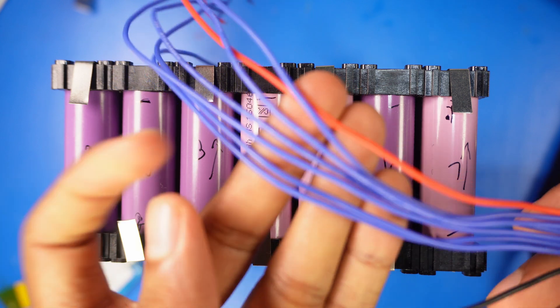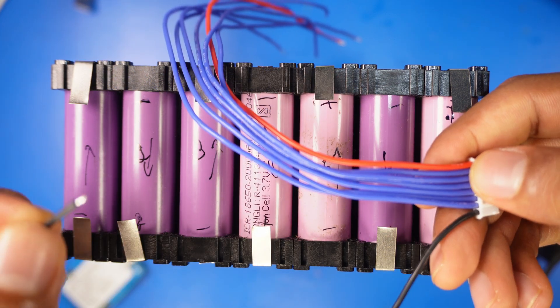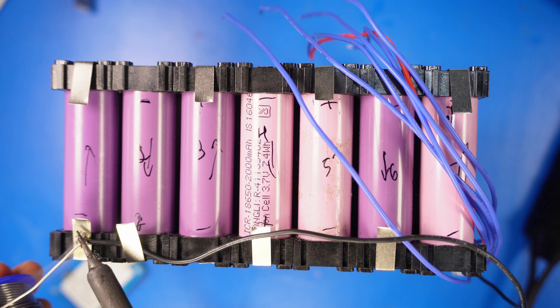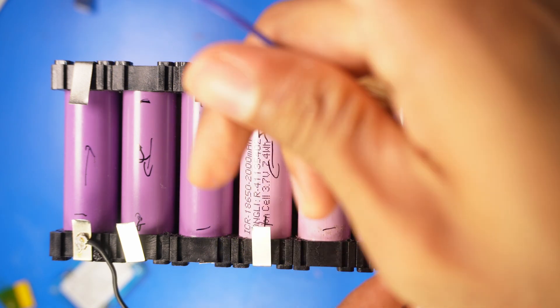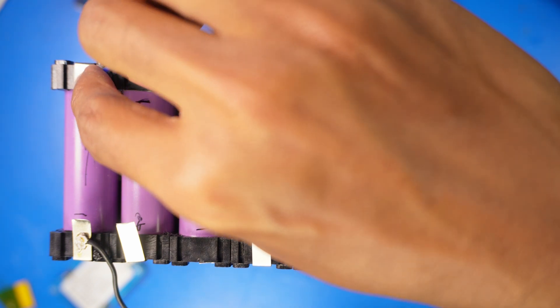This BMS black wire should be soldered to the negative of the whole battery pack. Then the second wire goes to the positive of the first cell.